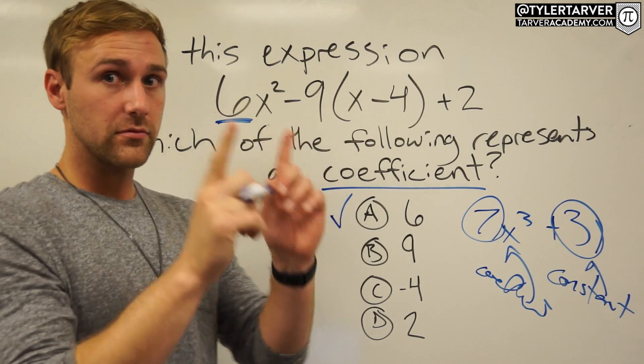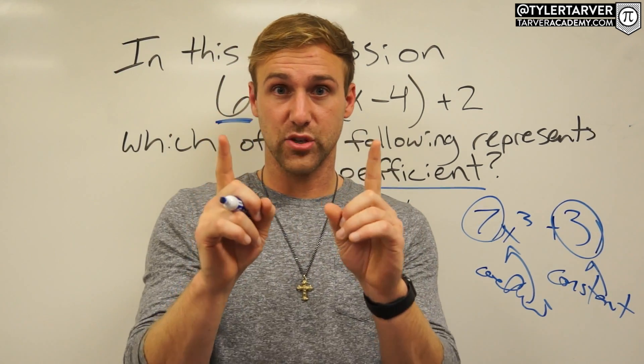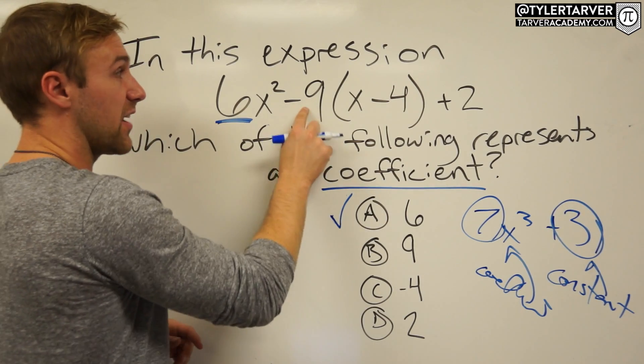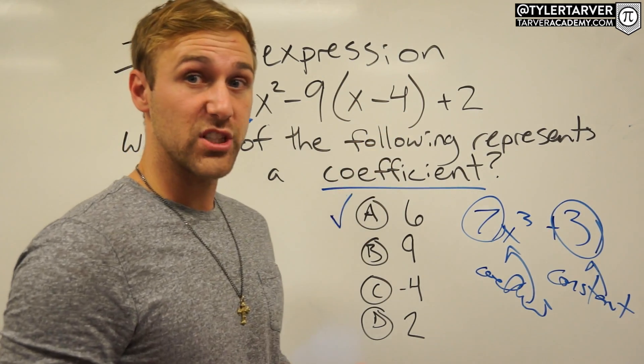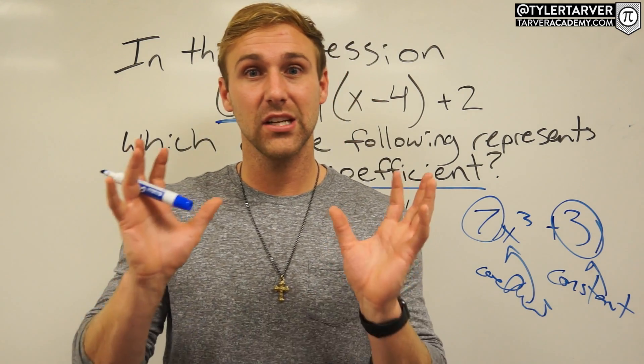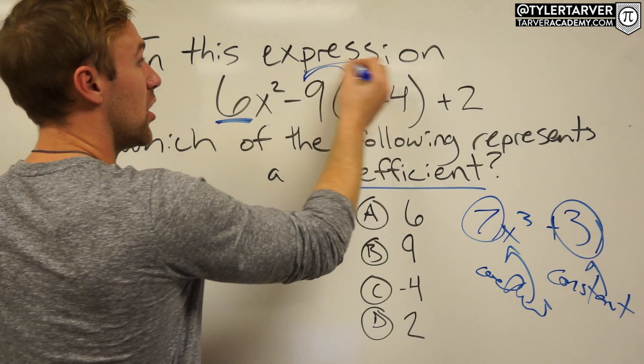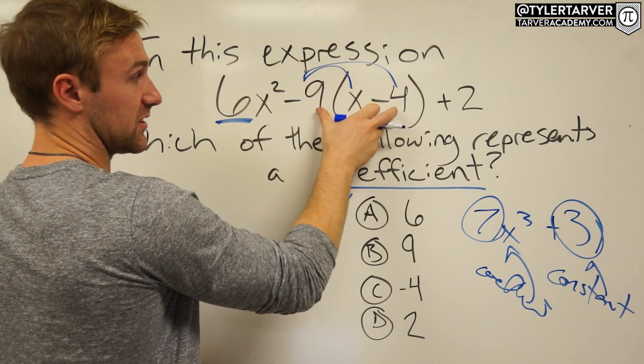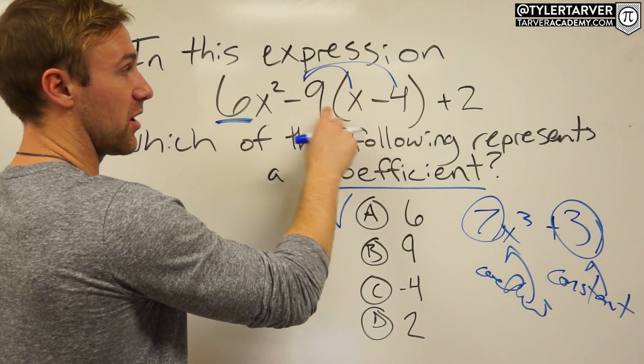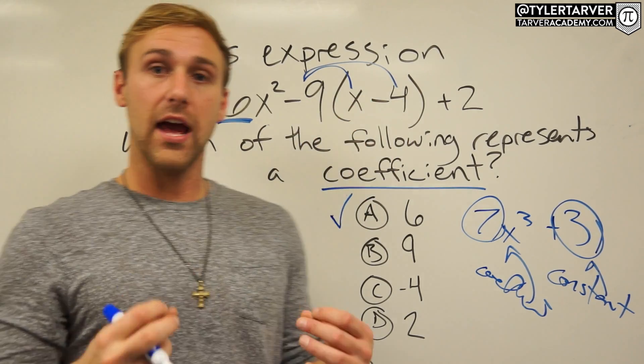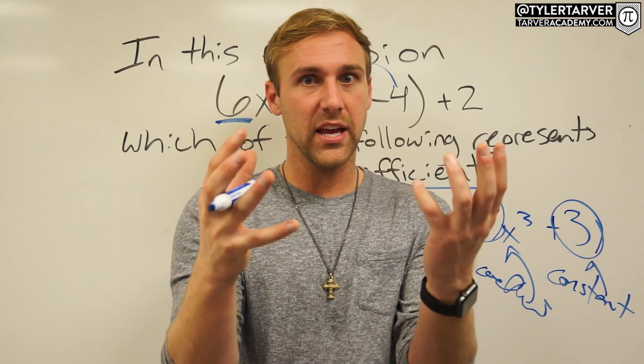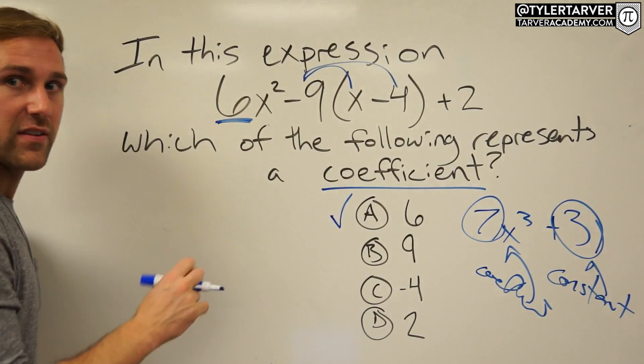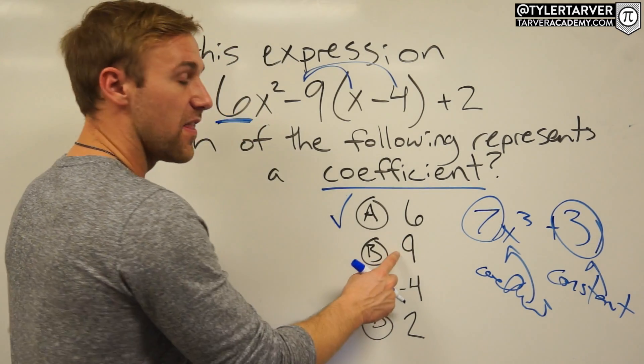We've got nine right here. Now this is where it could get tricky because negative nine needs to be done what to these two right here? It rhymes with shmishmibut. I'll give you a hint, it is distribute. So we would distribute this in there, which that would remain a constant because it'd be multiplying times a regular number, but this would be negative 9x which is a coefficient.